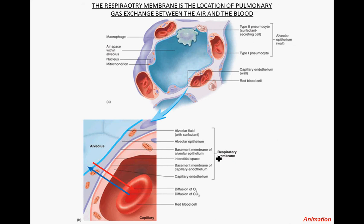The respiratory membrane is the location of pulmonary gas exchange between the air and the blood. Zooming in closely on one alveolus, we see the lumen — the airspace within the alveolus — which is lined with an epithelium. This is a simple squamous layer, with the nucleus of the simple squamous cell visible, and there is a very fine basement membrane.